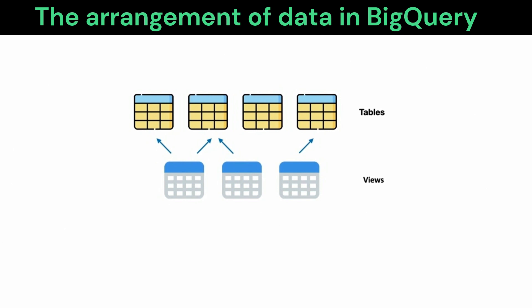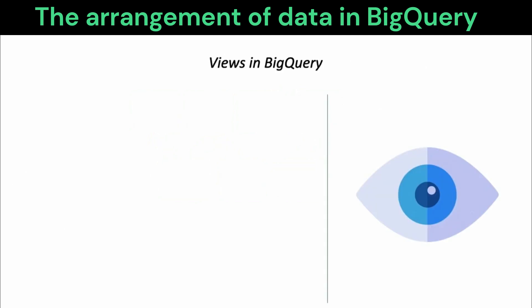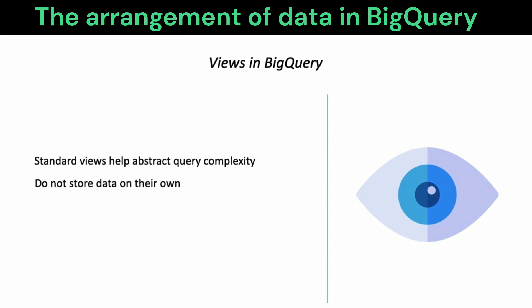As in most relational databases, views in BigQuery are constructed by means of queries on one or more underlying tables. The main purpose of such a view is to hide the complexity of an underlying query. A view can be defined as a query involving multiple joins and complex operations on data, and that same operation can be performed with a simple query against the view.